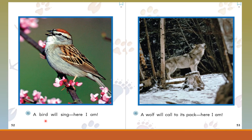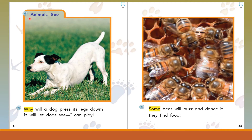A bird will sing — 'Here I am.' A wolf will call to its pack — 'Here I am.' Animals see. Why will a dog press its legs down? It lets other dogs see: 'I can play.'